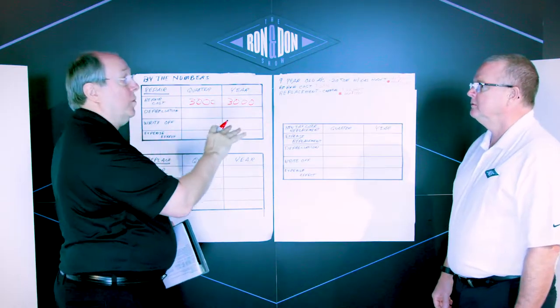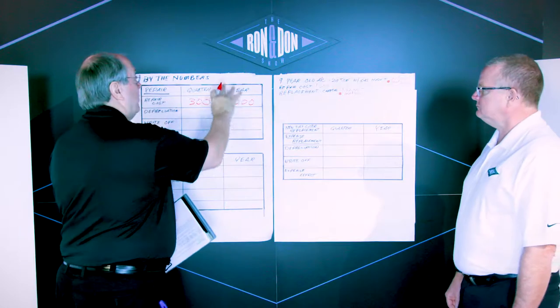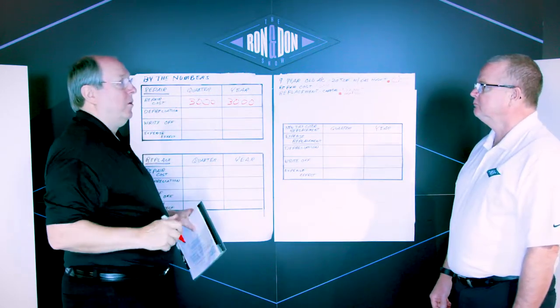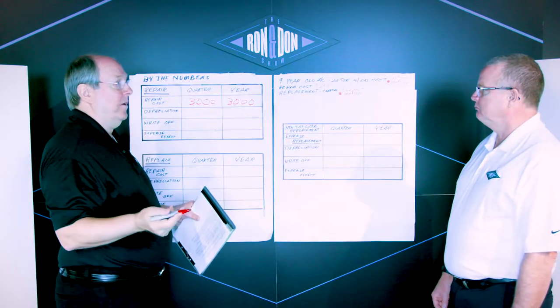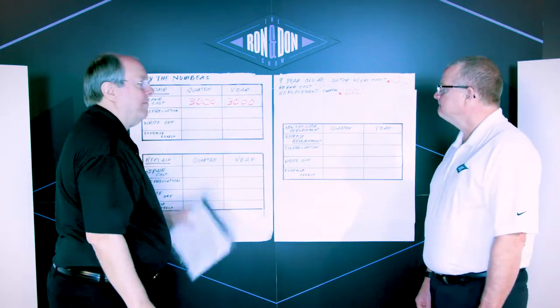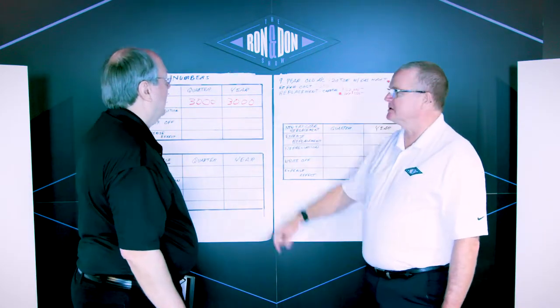Which is going to come through as $3,000 by the quarter, assuming there are no other repairs. And then for simplicity's sake, assume it's $3,000 for the entire year. It's going to carry through that $3,000 all the way to the end of the year. So the effect, even if we have more repairs later on, this repair is going to affect the year and the quarter by $3,000.